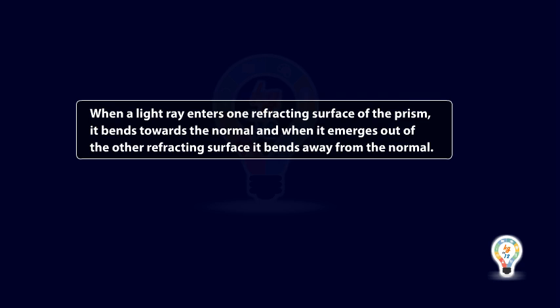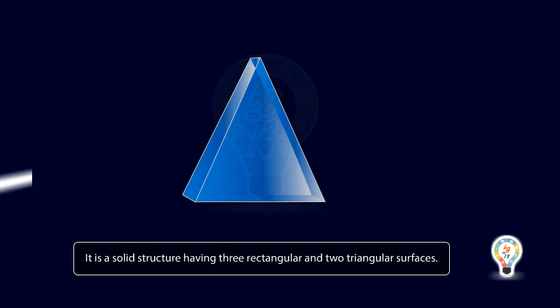This phenomenon can be observed in a lab environment using a triangular glass prism. It is a solid structure having three rectangular and two triangular surfaces.